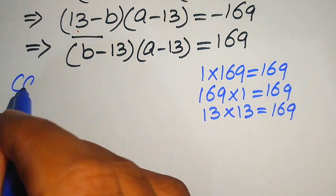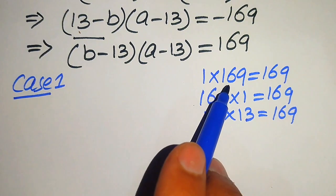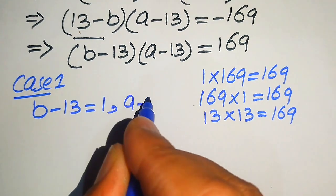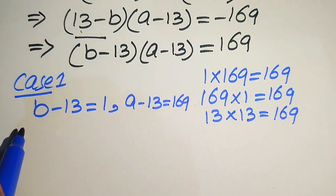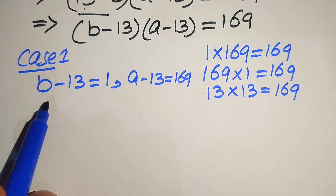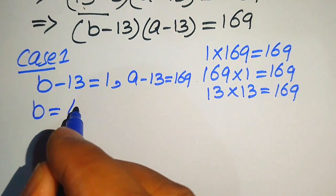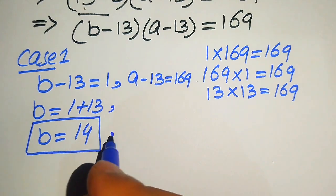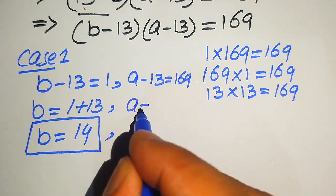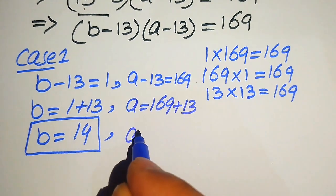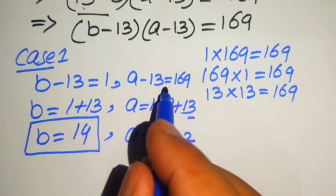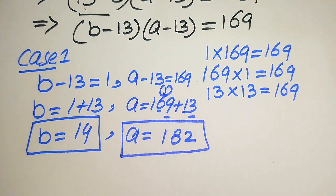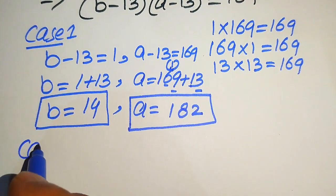In Case 1, we compare factors: b minus 13 equals 1 and a minus 13 equals 169. From the first equation, b equals 1 plus 13, so b equals 14. From the second, a equals 169 plus 13, so a equals 182.